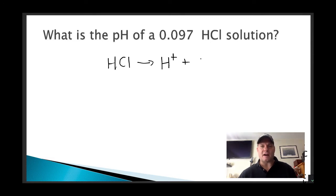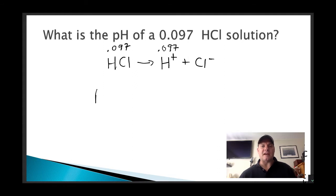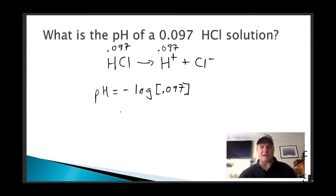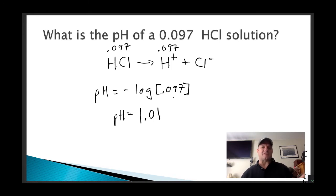Doing an ICE table in our heads, we can see that because there's total dissociation, if the concentration starts out at 0.097, the hydrogen ion concentration is going to be 0.097. To find pH, we simply do the negative log of 0.097, which gives a pH of 1.01. That makes sense — it's an acid, so of course it's less than 7.